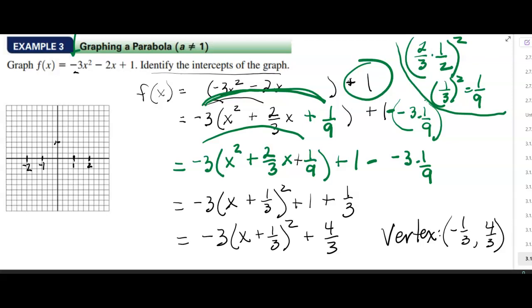Here's 1, and here's 2, and here's negative 1, and negative 2. That'll make it a little bit easier to graph. We know where the vertex is. Negative 1 third, 4 thirds. So it's going to be right there. Now, that's the vertex, and we have to know that to graph it. We know it's upside down. But they also said identify the intercepts of the graph.